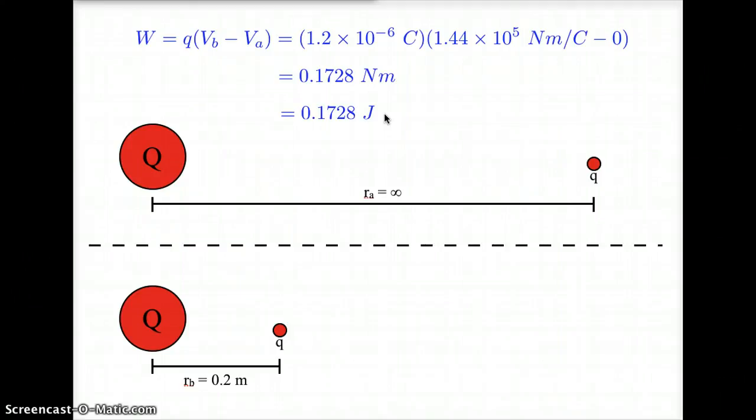If instead this problem had involved a positive Q and a negative q, if I had two opposite sign charges and was moving them closer together, then I would have gotten a negative value for work. This would mean that the attraction between the charges would have done the work for me. The two charges would have naturally moved closer together without my having to exert any effort. In this case, since they were both positive, it did take effort on my behalf, and that effort equals 0.1728 joules.